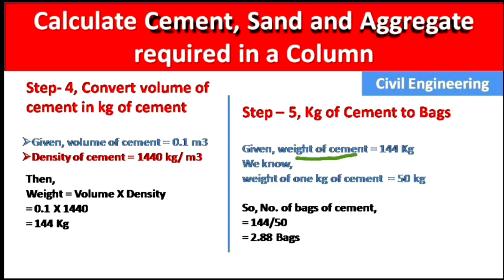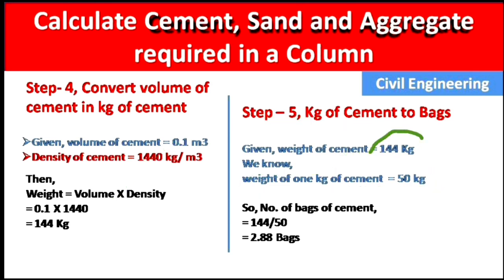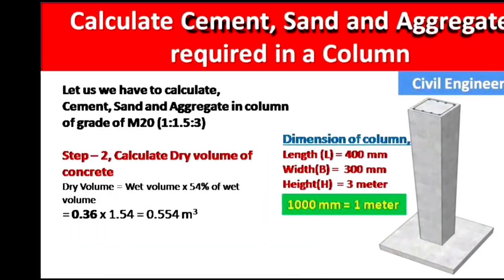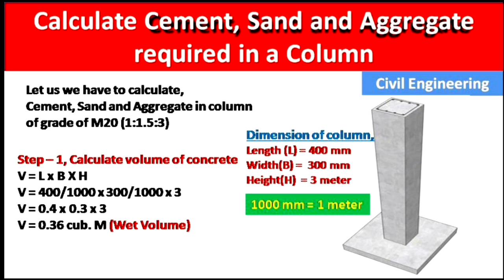In Step 5, we convert kg of cement into number of bags. Weight of cement = 144 kg, and one bag of cement = 50 kg (as found in the market). Number of bags = 144 / 50 = 2.88 bags. In this way we can calculate the cement, sand, and aggregate required in a column. Please like this video and subscribe to the channel for new updates about civil engineering. Thank you!